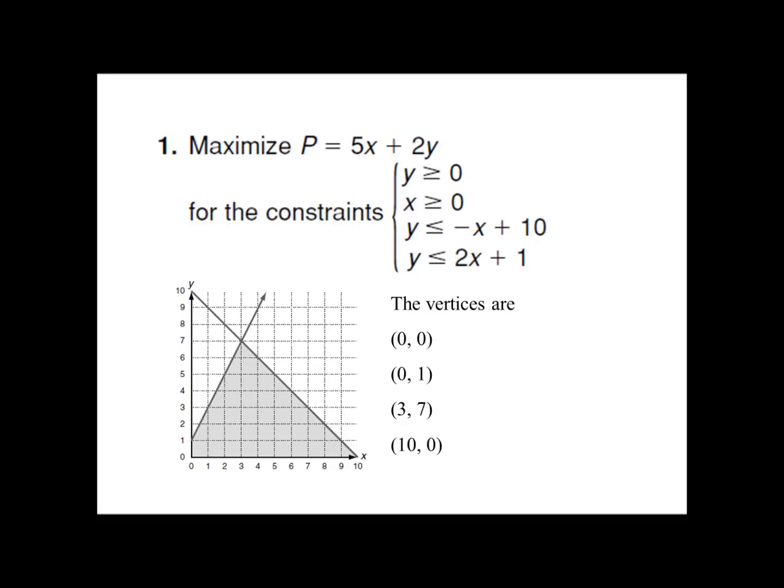Y is less than or equal to negative x plus 10 — plot the y-intercept at 10 and use a slope of negative 1 to draw the line. Y is less than or equal to 2x plus 1 — mark the y-intercept at 1 and draw a slope of 2. Now identify your four corners. It's not always going to be four corners, but in this one it is. These corners, or vertices, are (0, 0), (0, 1), (3, 7), and (10, 0). Now what I'm trying to do is maximize the objective function.